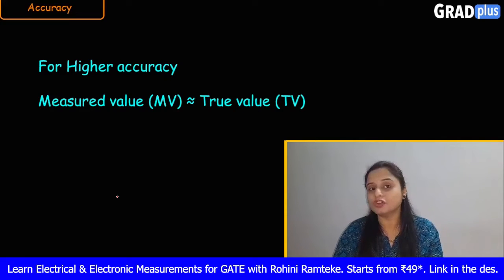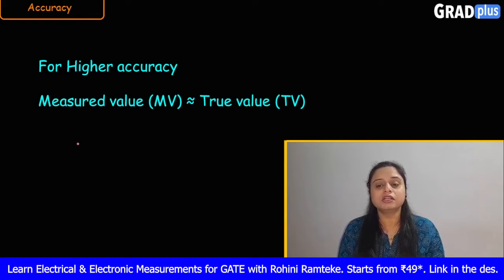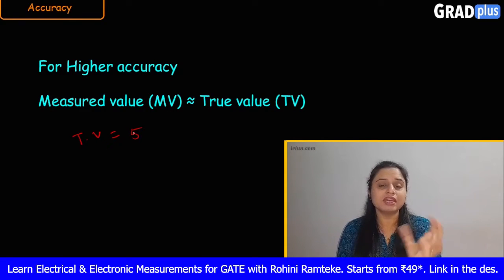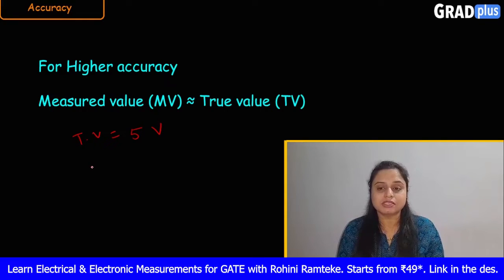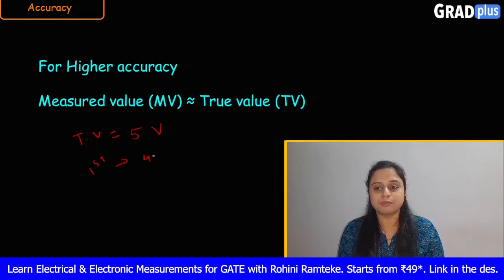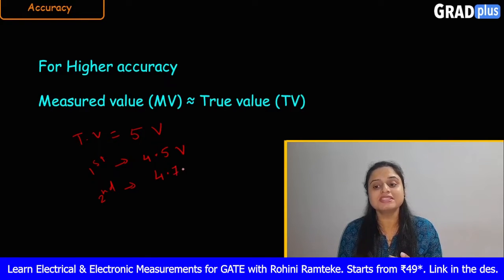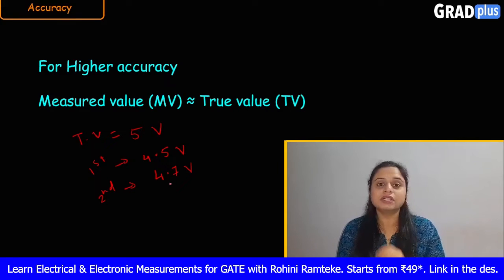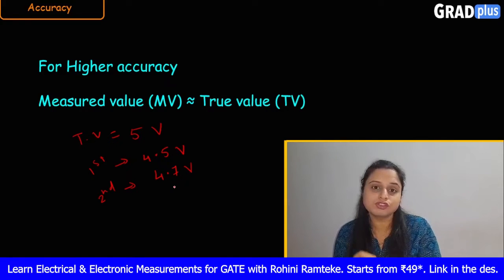Let's consider an example. Suppose the true value for a voltmeter is approximately 5 volts. For the first meter, the measured value coming out is approximately 4.5 volts, and for the second meter it is 4.7 volts. Which meter is more accurate? The requirement for better accuracy is that the measured value should be nearly equal to the true value.